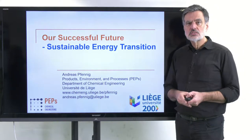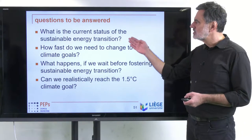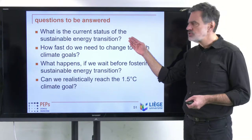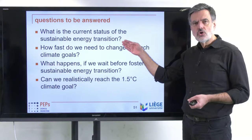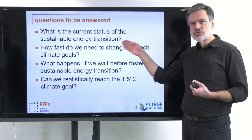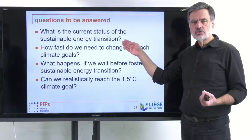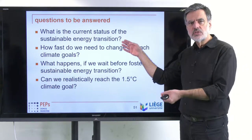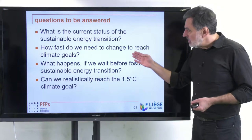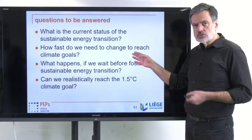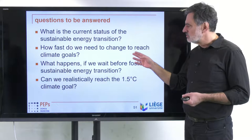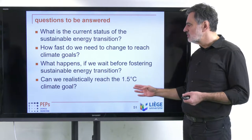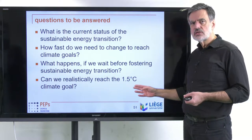The questions I want to answer in this video are: first, what is the current status of the sustainable energy transition? The sustainable energy transition refers to the change of our energy systems away from fossil resources, which produce CO2 and lead to climate change, towards sustainable energy systems like wind and solar. Then, how fast do we need to change to reach the climate goals? What happens if we wait before fostering sustainable energy transition, and can we realistically reach the 1.5 degrees centigrade climate goal?